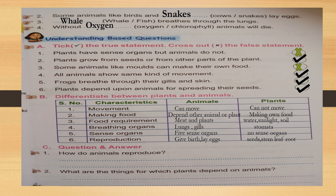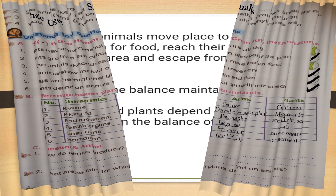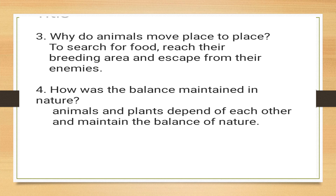Have you checked children? After section C — question and answer — we have done the previous class. Now turn to the next page. Page number 12. You have three questions. First: why do animals move from place to place? Animals move to search for food, to reach their breeding area, and to escape from their enemies.